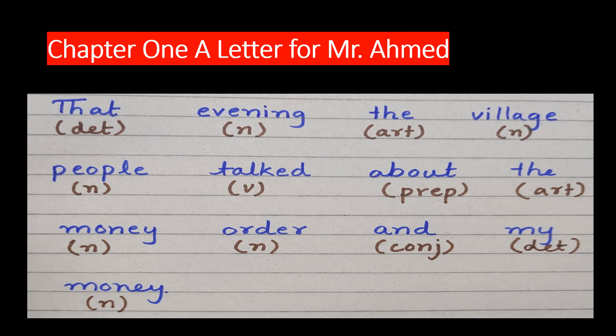After this, there is that, that is determiner. Evening is noun, that is common noun. The is article. Village is common noun. People is collective noun. Talked is the verb, about is the preposition, the is the article, money is common noun. Order is common noun. And is conjunction, my is determiner and money is common noun.